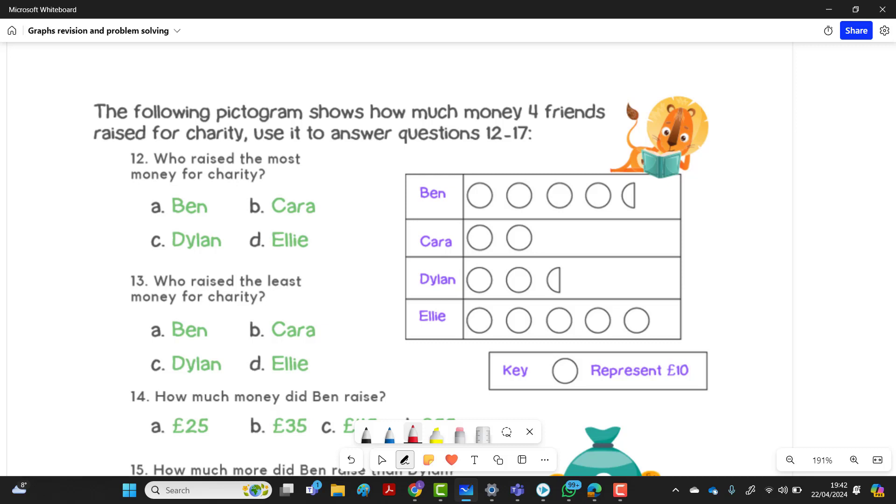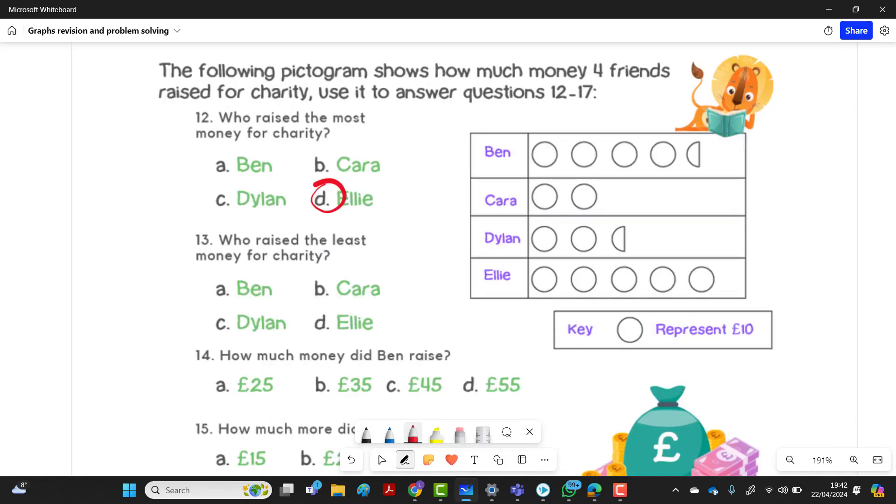The pictogram shows how much four friends raised for charity, use it to answer. The most important thing in pictogram is the key. So each circle is worth 10 pounds. So who made the most? The one is Ellie, that's the one that's got most circles. 12 is D. 13 B, who raised the least money for charity? Well, the one with the smallest number of circles, so that's Cara. 13 B. How much money did Ben raise? So Ben will be, there's five whole circles, so that's 50, and a half, so 55. 14 B.